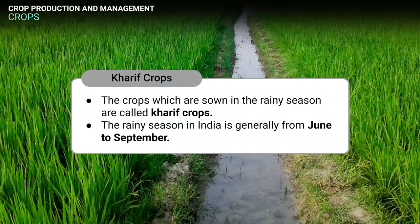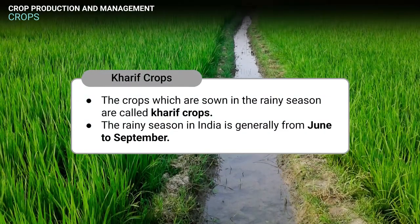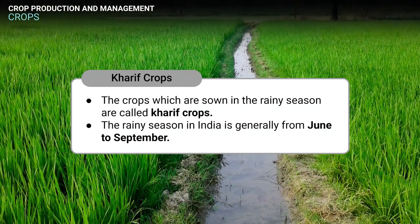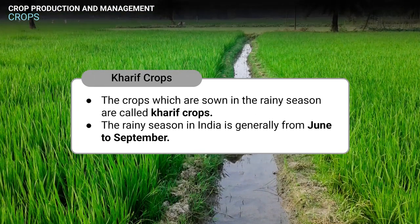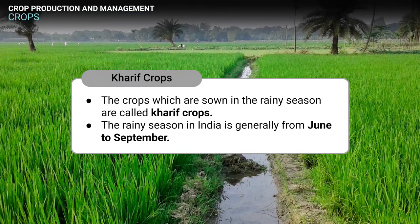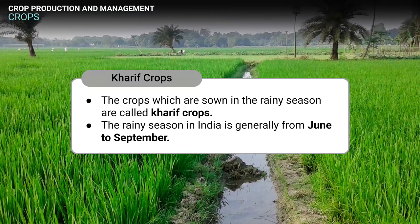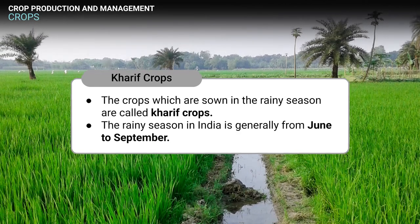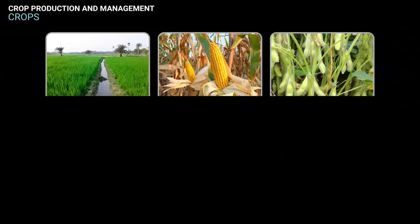Let us understand what are kharif crops and rabi crops. The crops which are sown in the rainy season are called kharif crops. The rainy season in India is generally from June to September. Some of the examples of kharif crops include paddy, maize, soya bean, groundnut, cotton, etc.